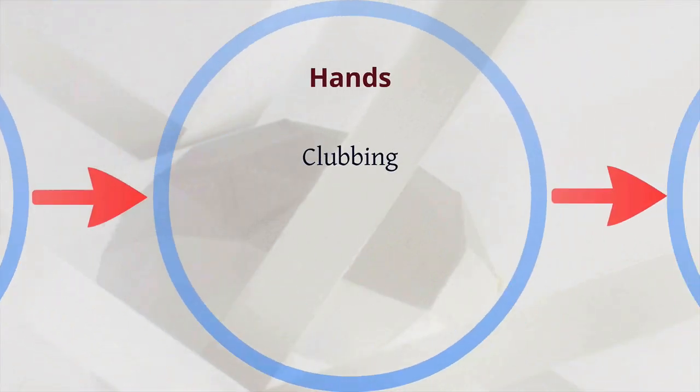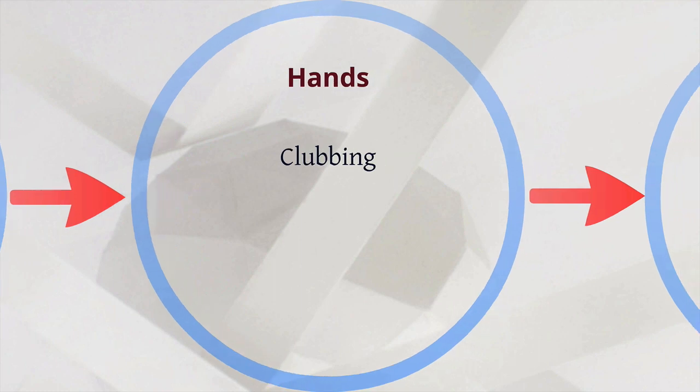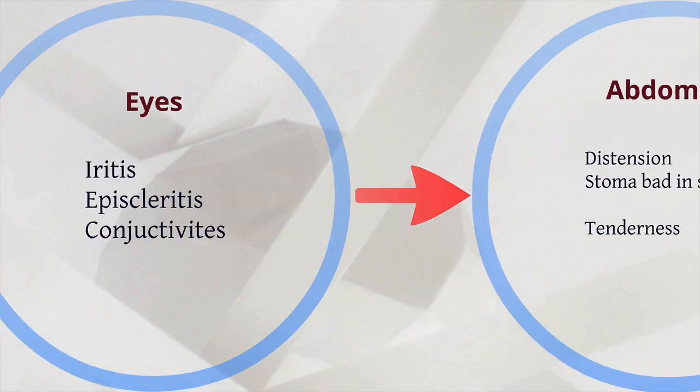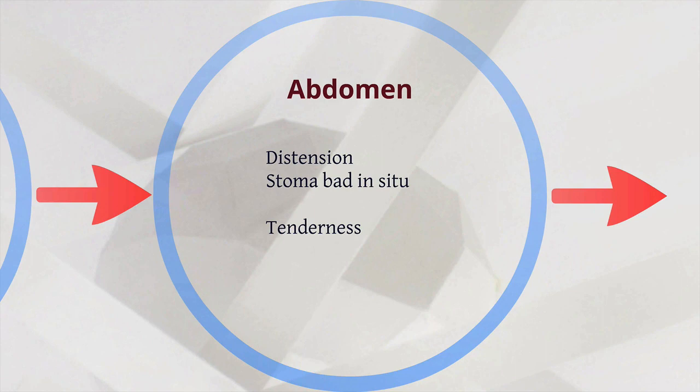Looking at the hands, clubbing may be present. Moving up to the face and eyes: ulcerative colitis is a systemic disease and can affect the eyes in a number of ways — the three most common being iritis, episcleritis, and conjunctivitis. For the abdomen, note if it is distended, whether there is a stoma in situ, and the presence of any tenderness.